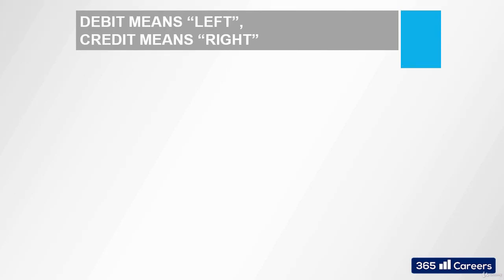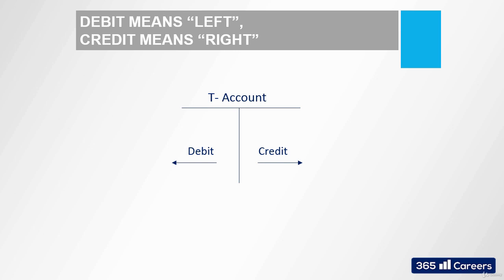One of the most common accounting terms that you will probably have already heard is debits and credits. These two words are used to describe the two sides of a T-account. Debit stands for the left side, while credit stands for the right side. Try to remember that — if you start thinking about the meaning of these words in the common world, you can get confused. Think of debit as the left side of a T-account and credit as the right side. It is as simple as that.